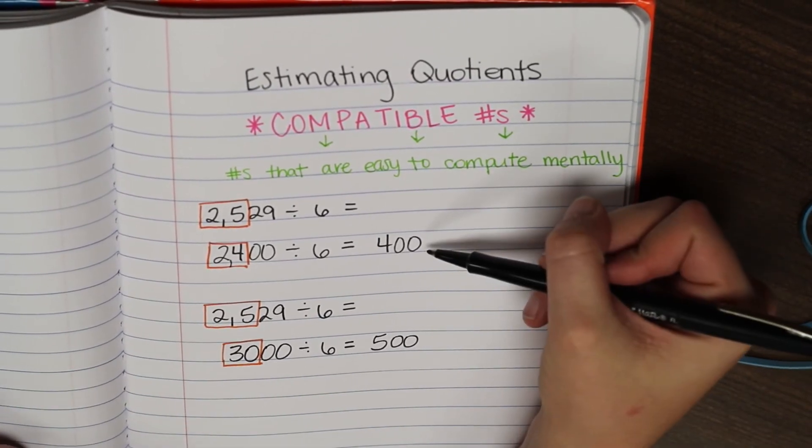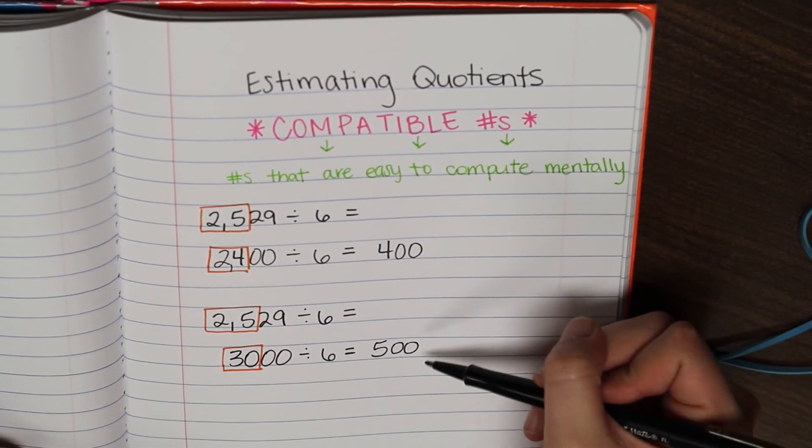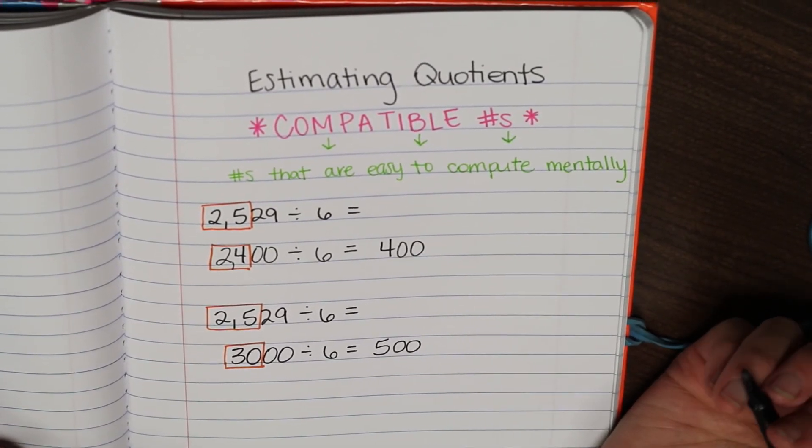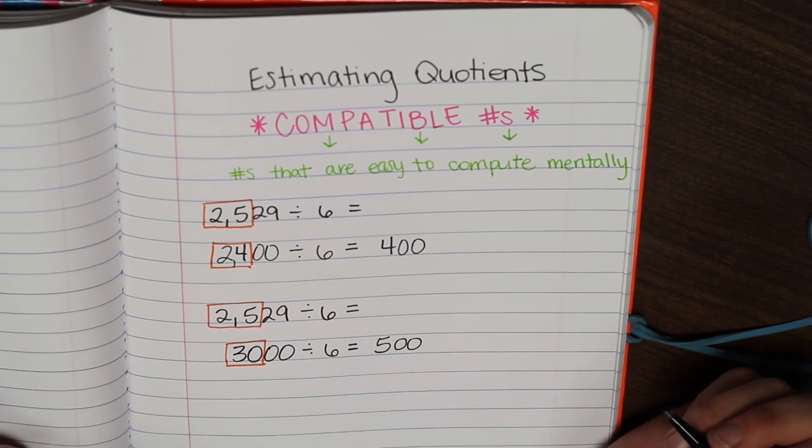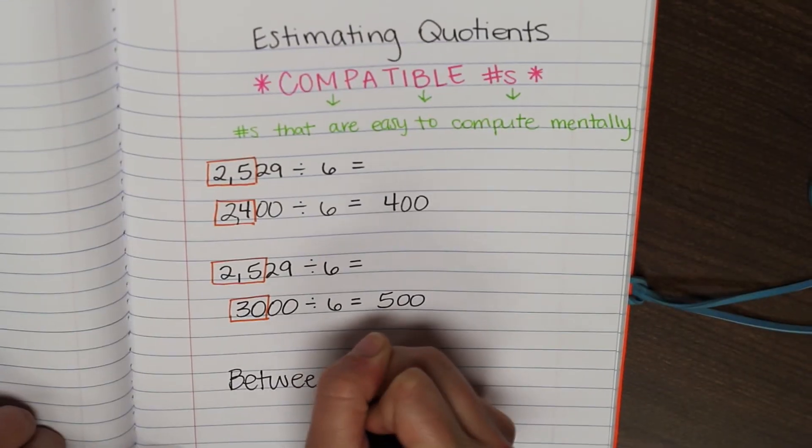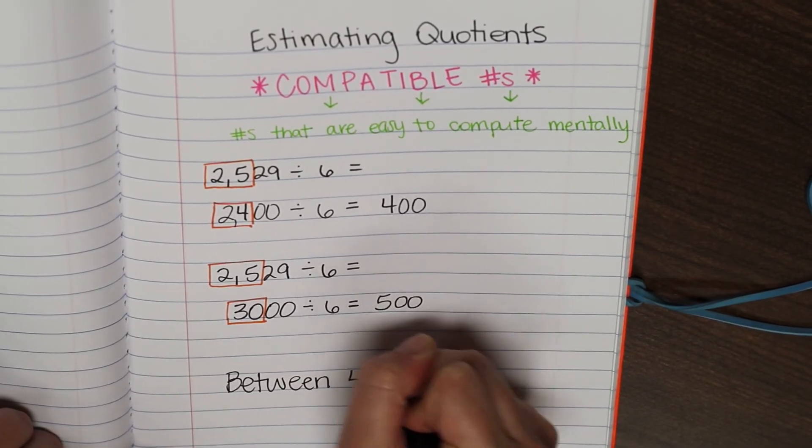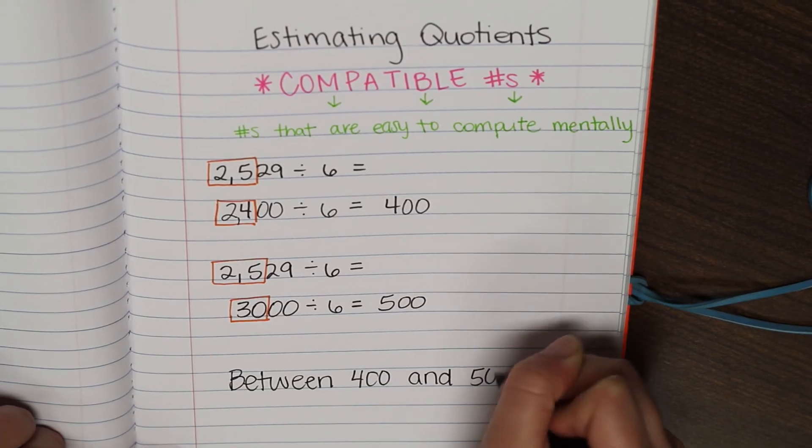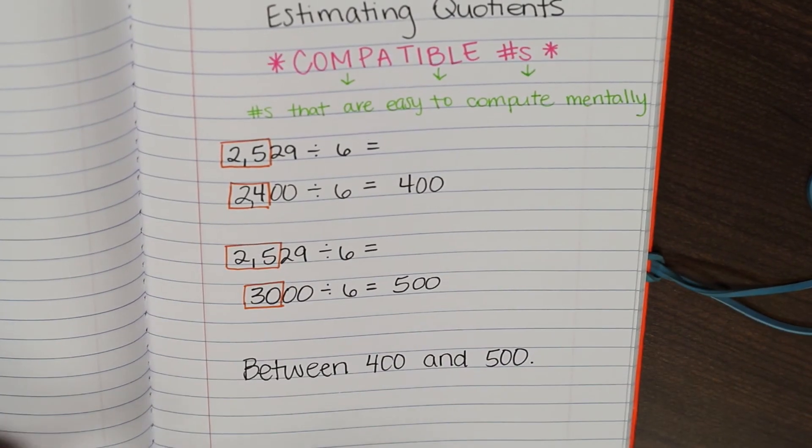So here we have an underestimate and an overestimate. So we know that the answer to 2,529 divided by 6 is going to be between 400 and 500. And that gives us a good estimate.